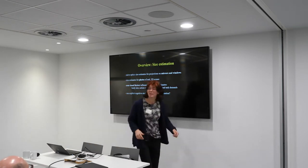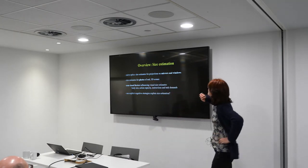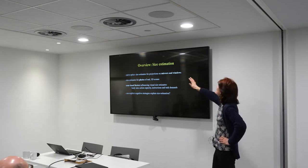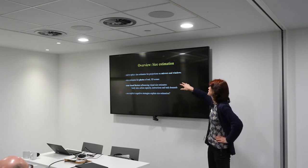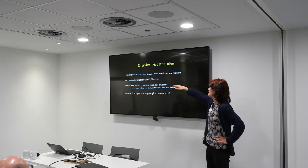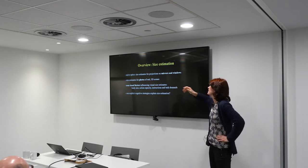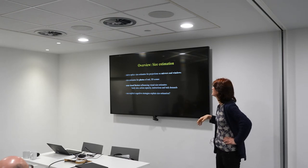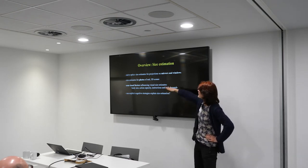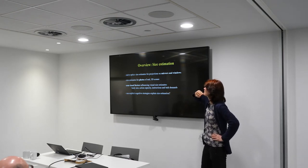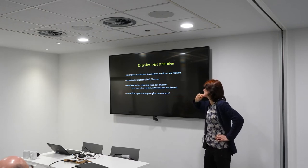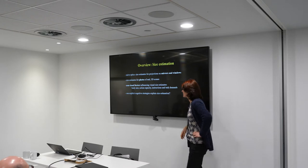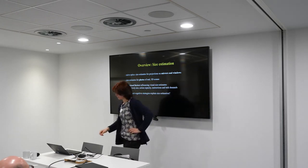As an overview, I'm going to talk about naive optics and how I got into this, looking at size estimates for projections on mirrors and windows, and then compare that to size estimates for two-dimensional photographs of real 3D scenes. I'm probably not going to have time to talk about non-visual factors influencing visual size estimates, and then I'm going to be talking about to what extent explicit cognitive strategies might explain what's happening.